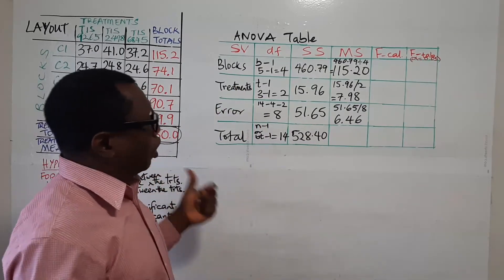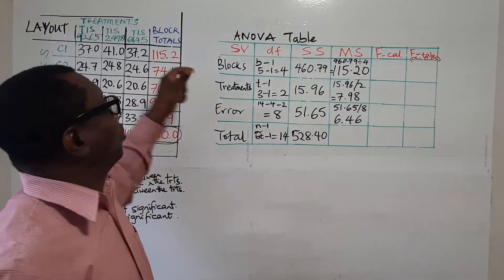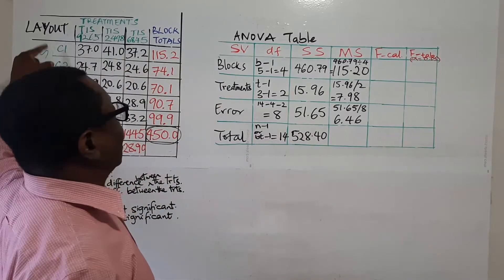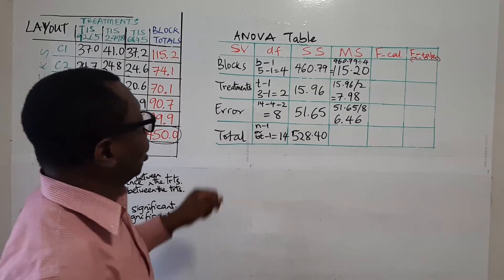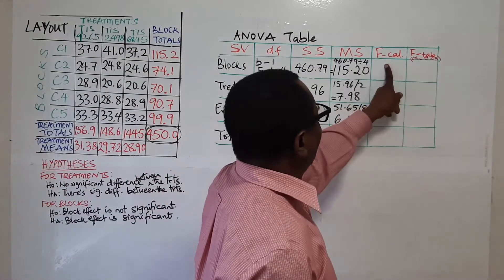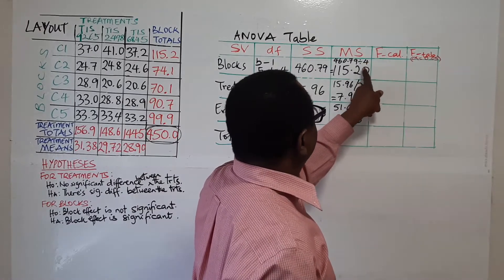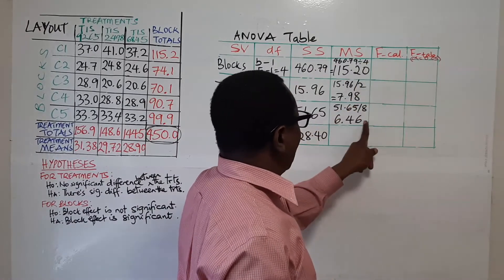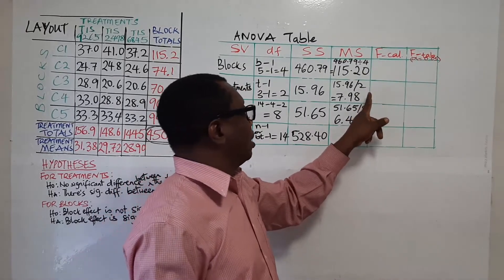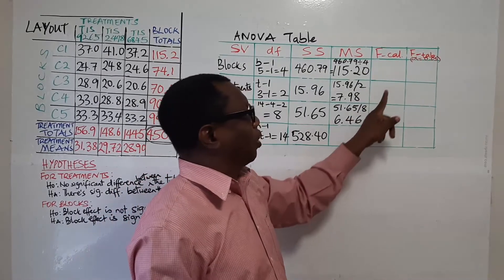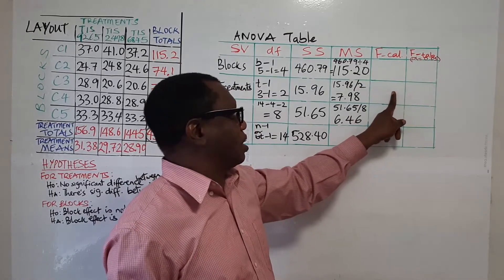That's what we are interested in. But it doesn't do any harm if you also test whether there is actually significant difference between the blocks. Just as we have in the hypothesis. So to do that, here I will divide MS for blocks by MS for error. And I will also divide MS for treatments by MS for error to get the value that will be in this set.